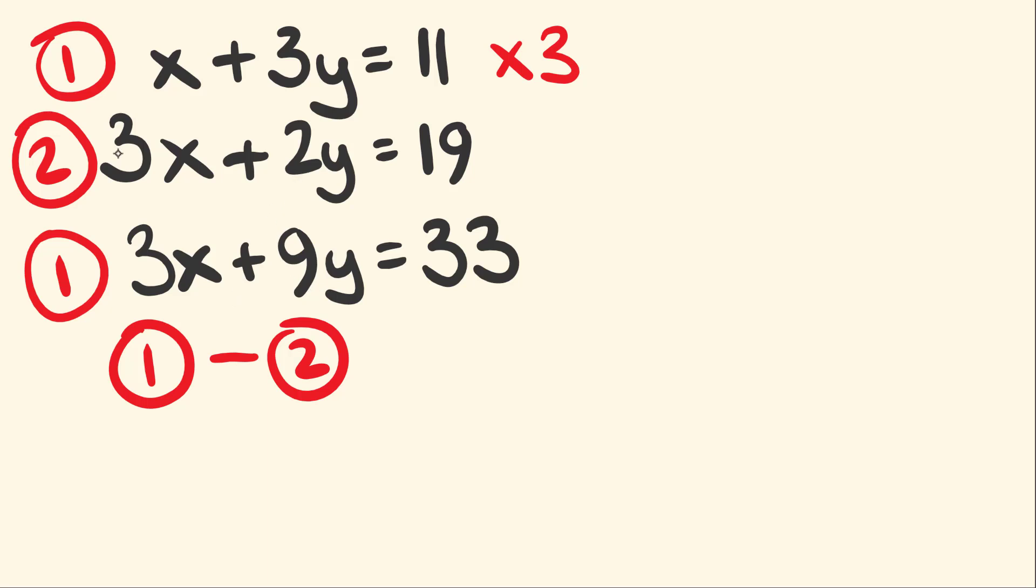So first off, we have 3x minus 3x. Well, that's going to be the elimination part, right? We get nothing. Now we move across to the y's. We have 9y take away 2y. This gives us 7y. And this is equal to 33 take away 19. That gives us a value of 14.